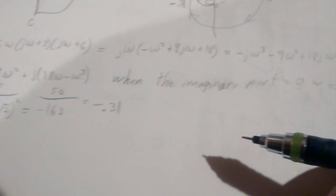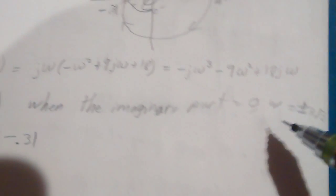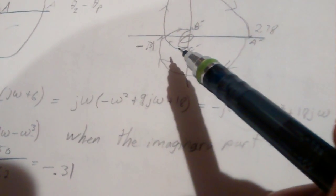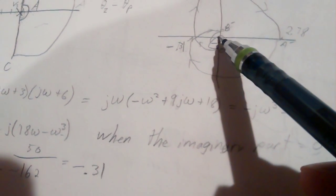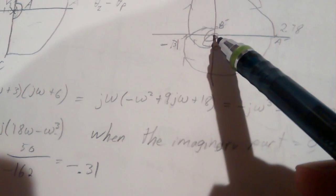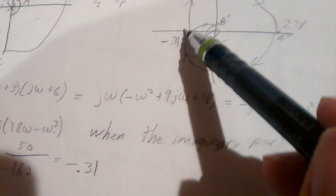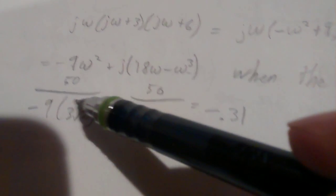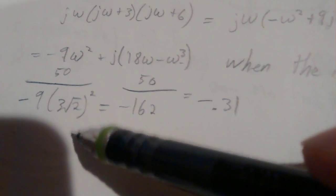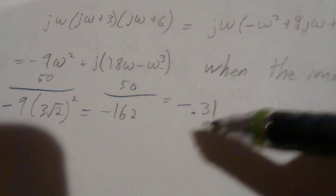When the imaginary part is 0, omega equals plus or minus 3 root 2. That's important because where j omega is 0, we're on the real axis. So omega is 3 root 2. We plug back into the original transfer function to get 50 over negative 9 over 3 root 2 squared, which equals negative 0.31.